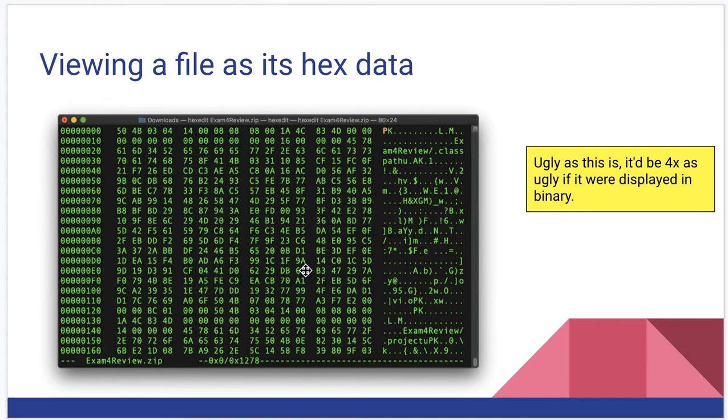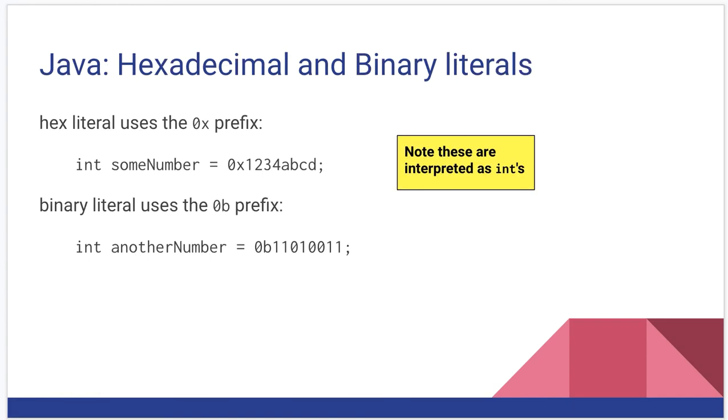Just to kind of reinforce the point about hex data as something we use to make binary strings easier to view, we can view any file as its hex data with the right program. I think this is probably hex edit in Linux. It groups things into bytes. Actually, it groups things into groups of four bytes to kind of organize things better, and it shows their offsets from the beginning of the file. This is ugly, but it would be four times uglier if this was displayed in binary.